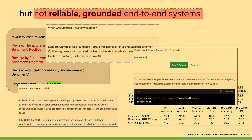We can take a look at an example here. If we ask a large language model the question 'when was Stanford University founded,' it'll give the wrong answer — saying 1891 instead of 1885. Similarly, if we ask about the Colbert model, which is a system we developed at Stanford, it'll say it was developed by Salesforce Research. The same problem occurs for questions about programming.